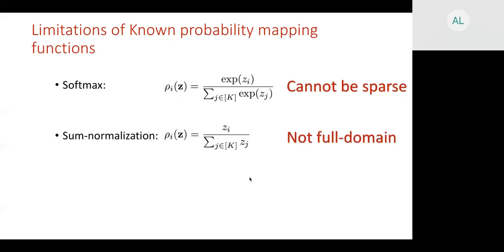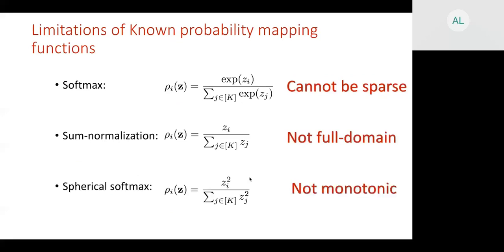The known probability mapping functions have certain limitations. Softmax always produces non-zero probabilities, because the numerator is an exponential and can never be zero — so we cannot get sparse outputs. Sum normalization has the issue that it cannot take negative values of Z, causing the output to violate probability constraints. Spherical softmax has an issue of non-monotonicity due to the squared term.